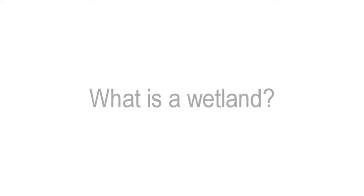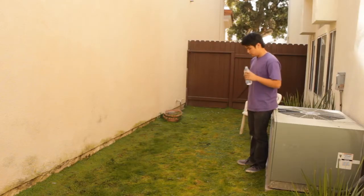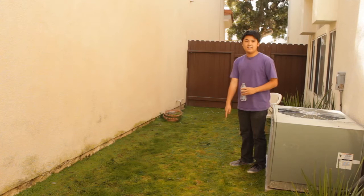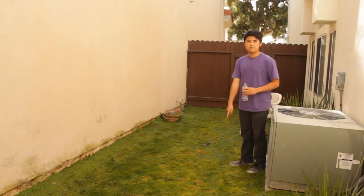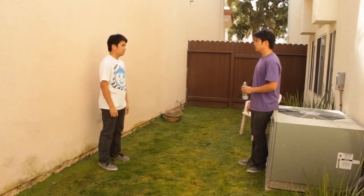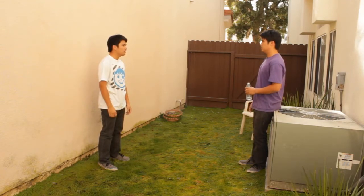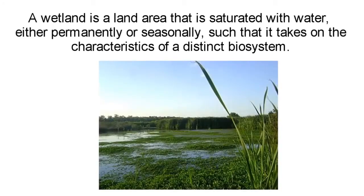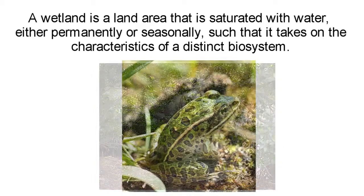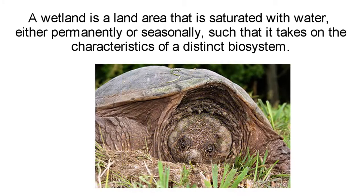So first of all, what is a wetland? A wetland is a land area that is saturated with water, either permanently or seasonally, such that it takes on the characteristics of a distinct biosystem.